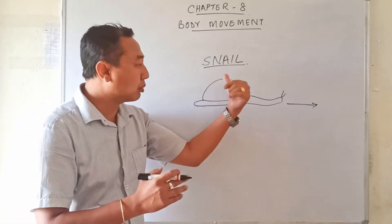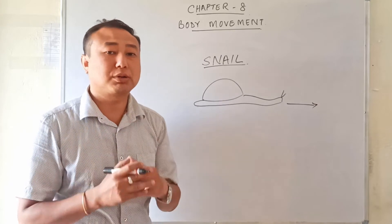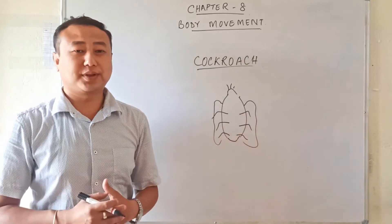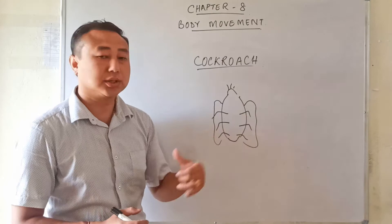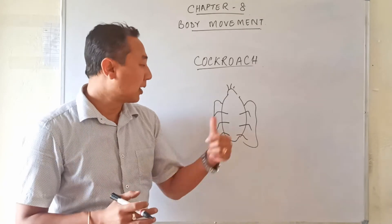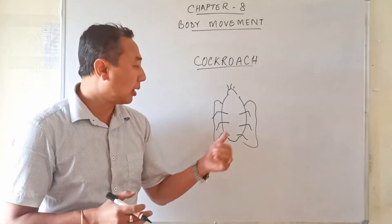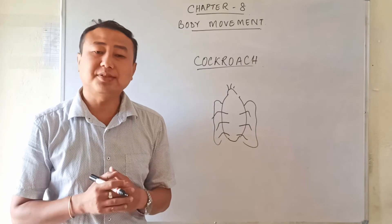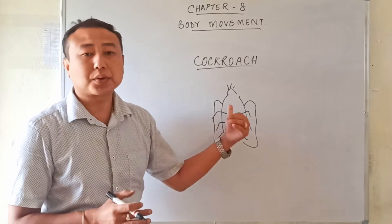So the movement in human beings, the movement in earthworm, and the movement in snail are all caused by the contraction and expansion of muscles. The next insect is the cockroach. The front part of their body contains muscles — some muscles are attached with the legs while some are attached with the wings, which we call breast muscles. The contraction and expansion of these breast muscles helps in the movement of the wings, while the muscles attached to the legs help the cockroach to walk on the surface.